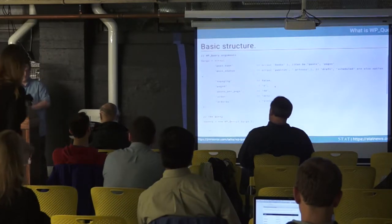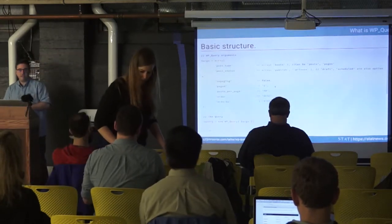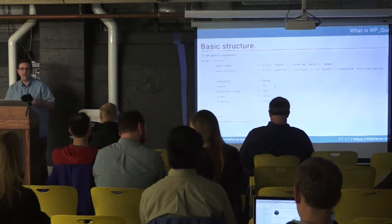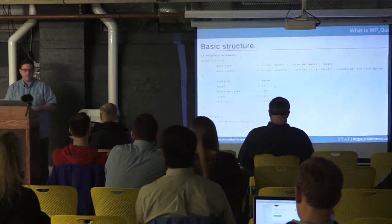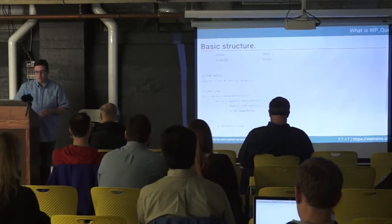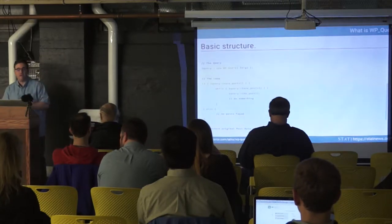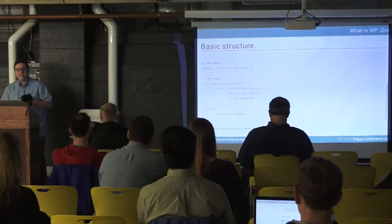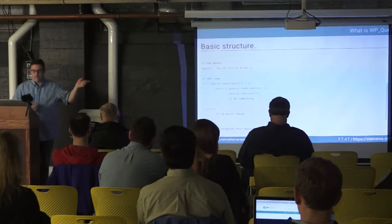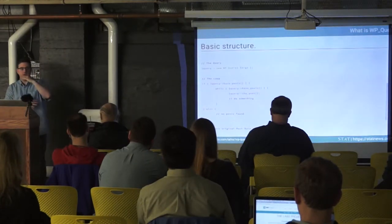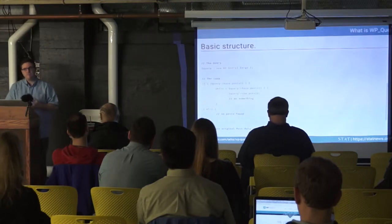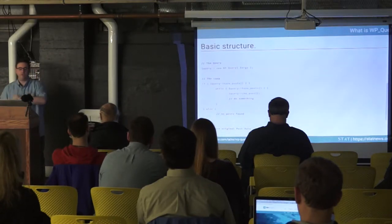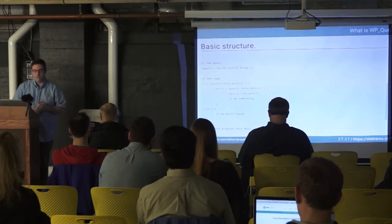The last two go hand in hand as well. One is order — you can choose ascending or descending — and orderby, so you can choose by title, by modified date, by post date, etc. Once you have your array built, you assign a variable to the WP_Query class and pass in those arguments. The second way of doing it is foregoing that first variable and just building the array right in the class call. I'll show an example of why I used the array version as opposed to just pulling it into the class call.